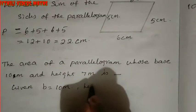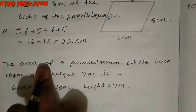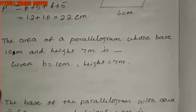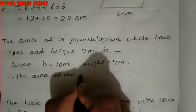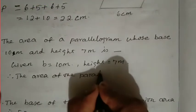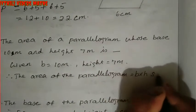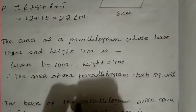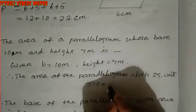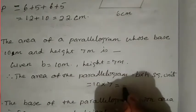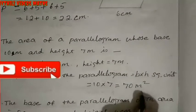Height h = 7 meters. These two values are given and we have to find the area. The formula: area of parallelogram = b × h square units. So area = 10 × 7 = 70. The unit is meter, so the answer is 70 meter square.